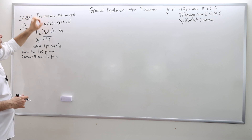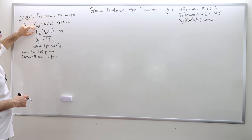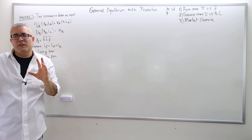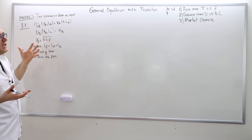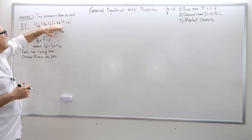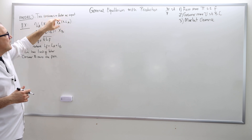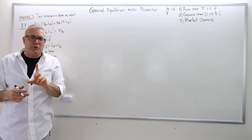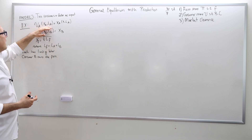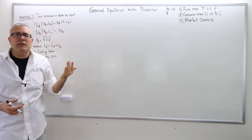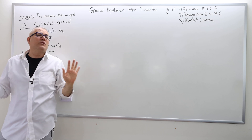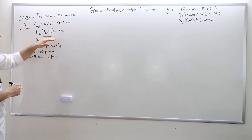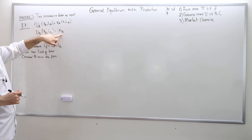We have two consumers: consumer A and consumer B. Both agents have utilities over X and L — a consumption good X and leisure L. The utility of agent A is a Cobb-Douglas of good X and leisure. The endowment of labor is one for both agents, so each agent has one unit of labor they bring to the market. Agent A enjoys leisure, but agent B doesn't care about leisure — she gets no utility from leisure. She's workaholic in a sense; she only cares about good X.